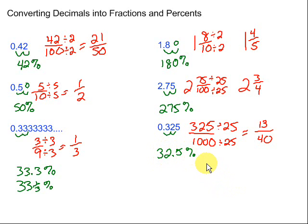Again, another important thing to remember is that these numbers are all equivalent. We're just showing different ways that we can write them. 0.325 is the same thing as 13 over 40 is the same thing as 32.5%. Hopefully, this is helpful in converting decimals into fractions and percents. Good luck.